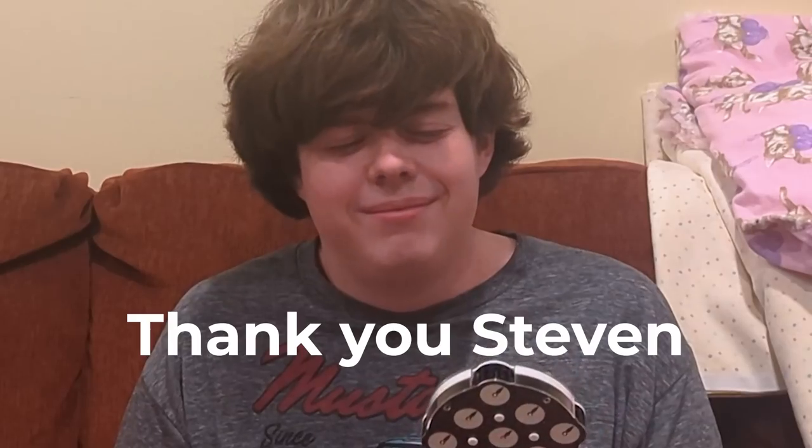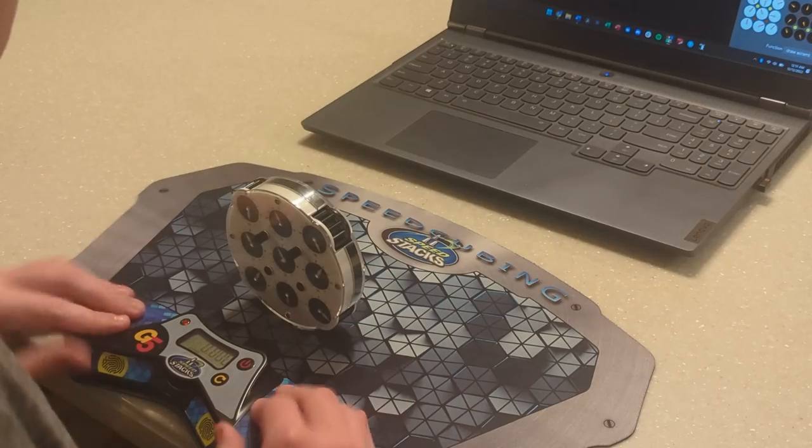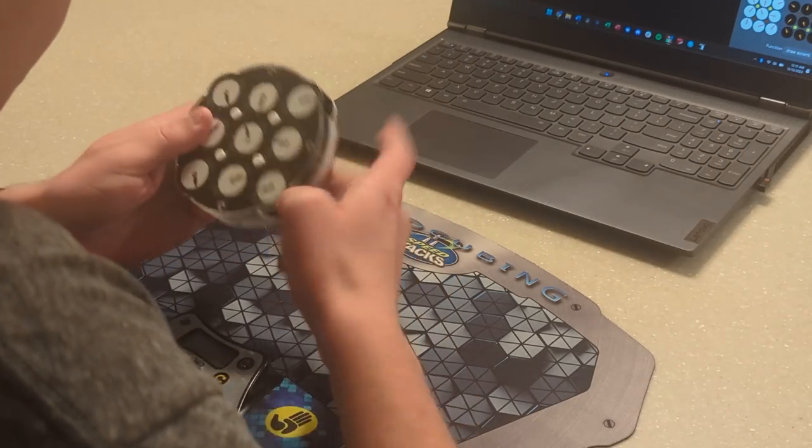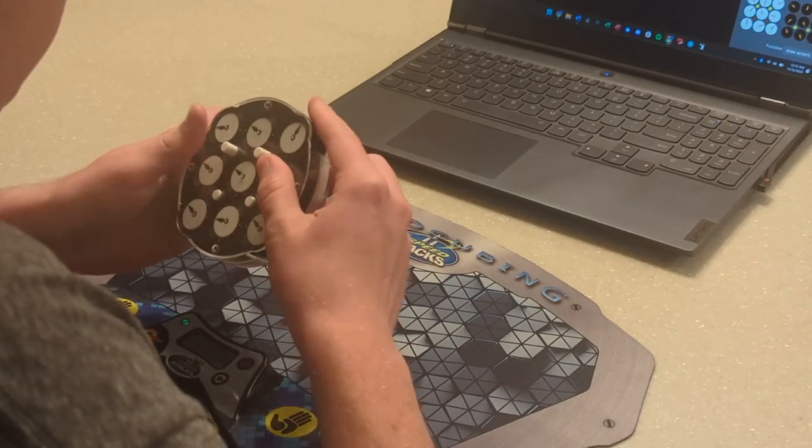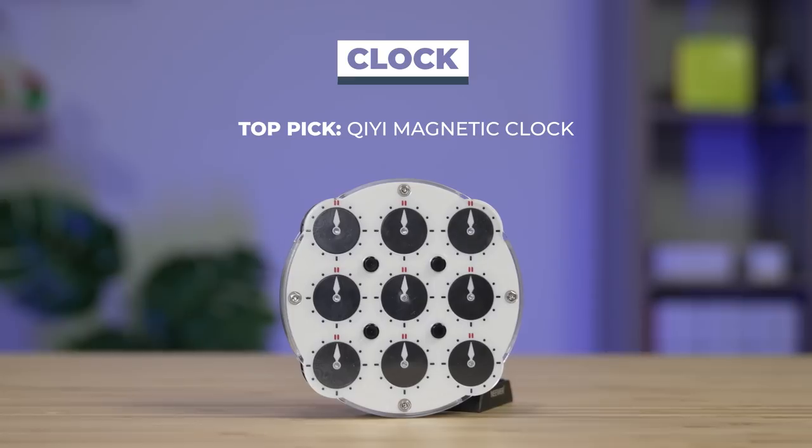Rounding out the video, we have clock. Get it? Because it's round. Anyway, just buy the Qiyi. It's the only puzzle that's remotely decent. If you care about speed at all, this is the only viable option. I guess if you just want to know how to solve it, the Shang Shao is fine, but buy the Qiyi, and thank me later.